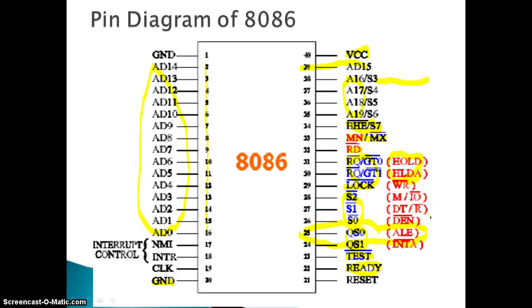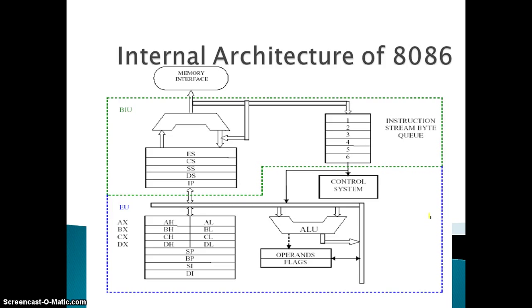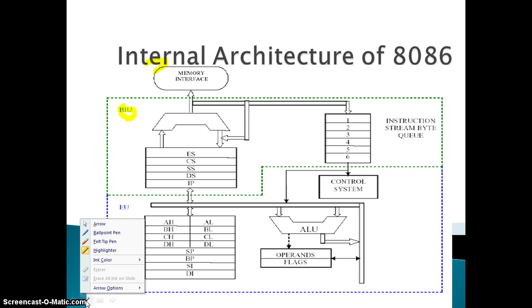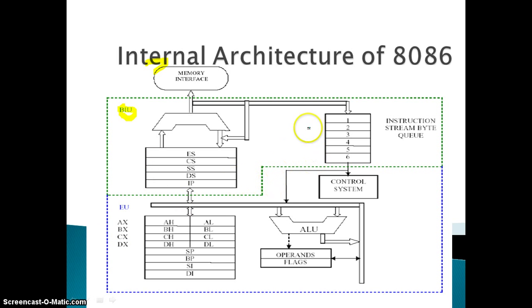Next is the complete basic architecture of the 8086. It is divided into two blocks: one is the BIU (Bus Interface Unit) and the other is the EU (Execution Unit). The BIU basically generates the physical address of data.